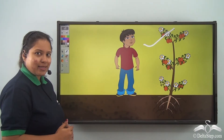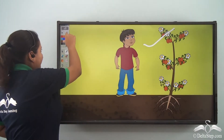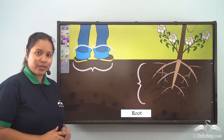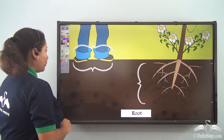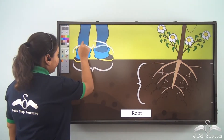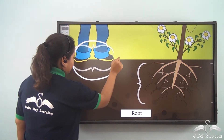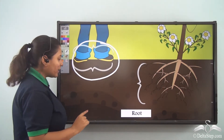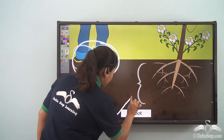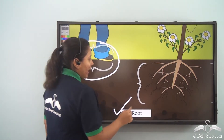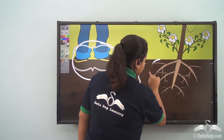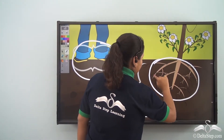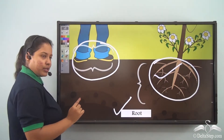Let's revise once again. Which is the first part that we saw? It was the feet. What is the feet of the plant known as? It is known as root and it stays under the soil. This is the root.